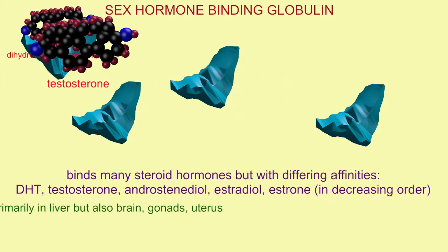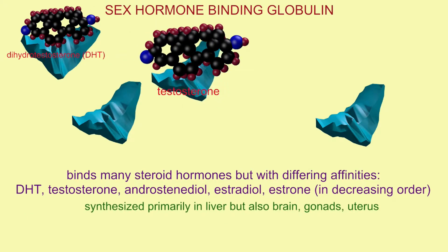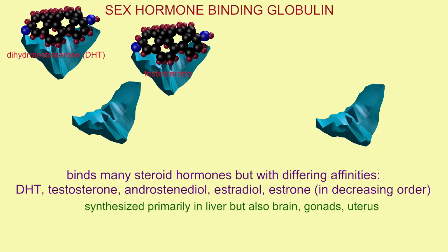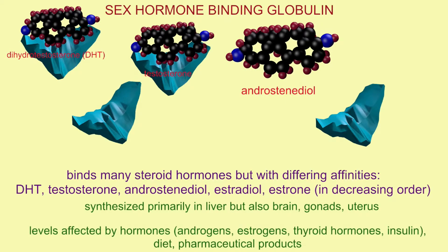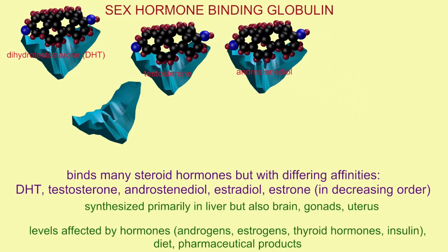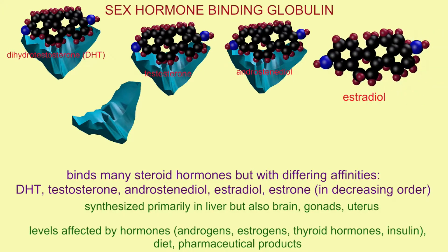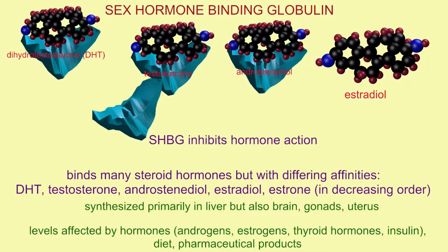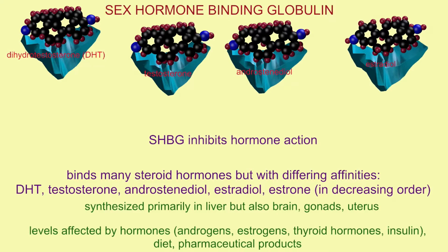This protein binds many steroid hormones but with differing affinities. In order of greatest affinity to bind are dihydrotestosterone, testosterone, androstenediol, estradiol, and estrone. This protein is primarily made in the liver but is also made in the brain, gonads, and uterus, and its levels can be affected by a number of phenomena such as hormones, diet, and pharmaceutical products.